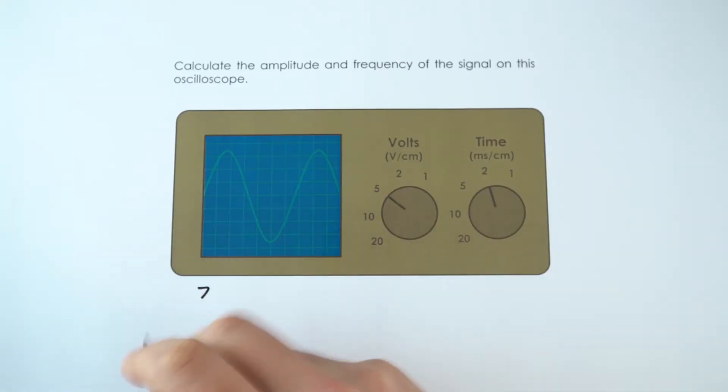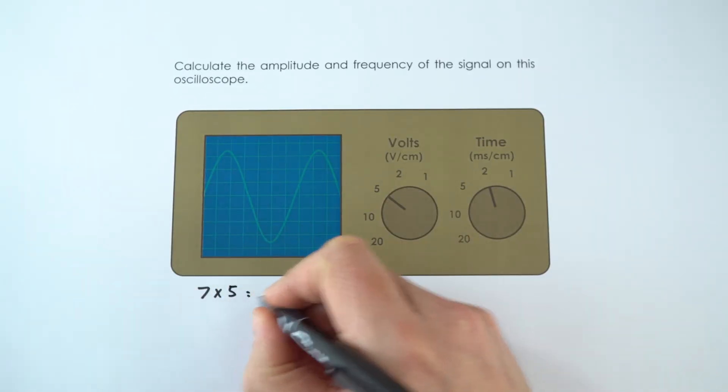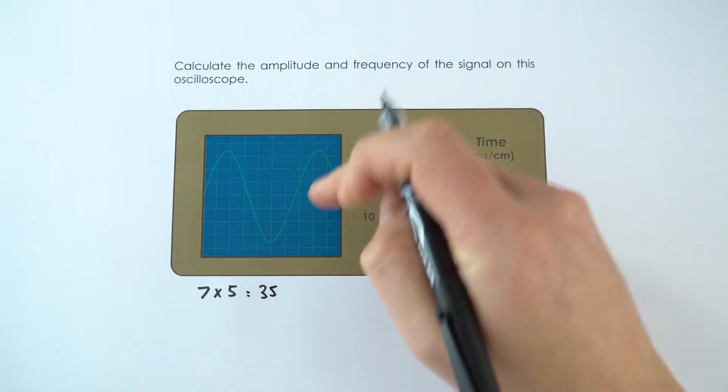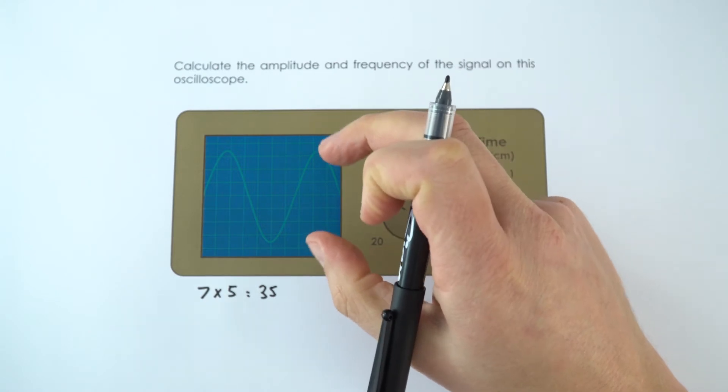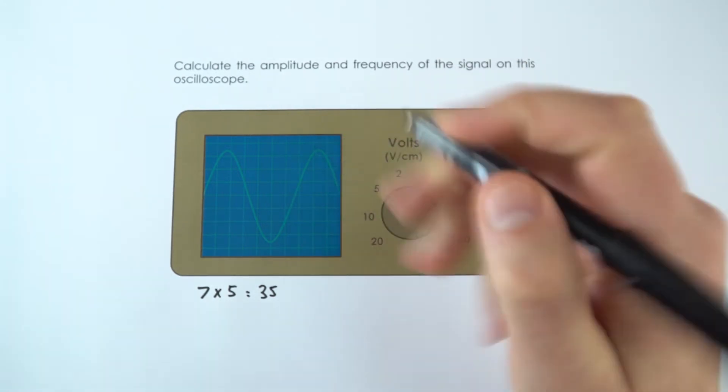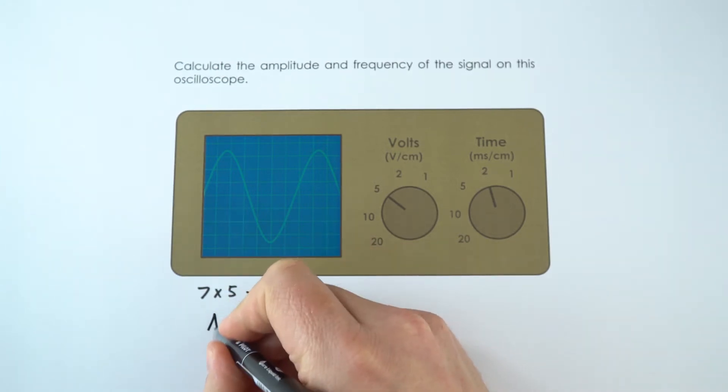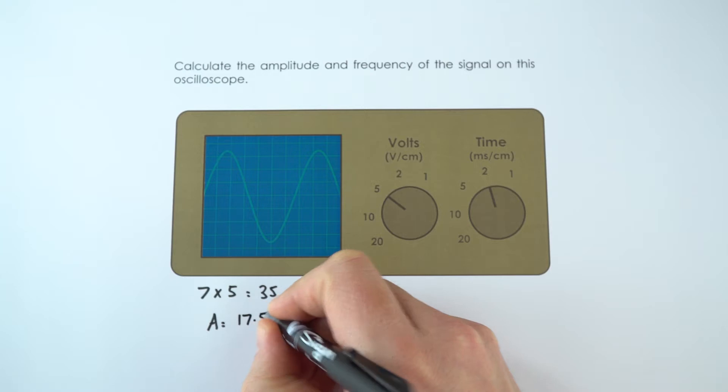We've got seven squares, each of which is equal to five volts. Seven times five is 35, but that's the total from the trough to the peak. If we're looking at the amplitude, we're looking at effectively the midpoint to that height. So the amplitude of this wave is equal to half that value, which is 17.5 volts.